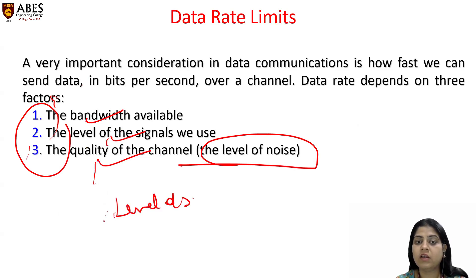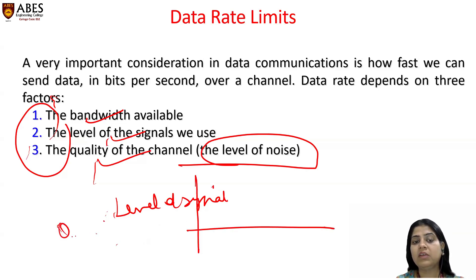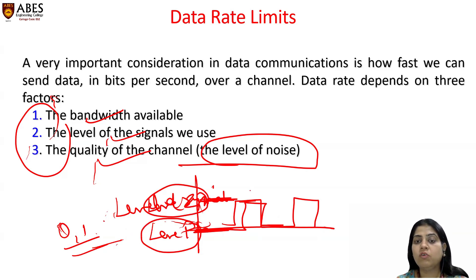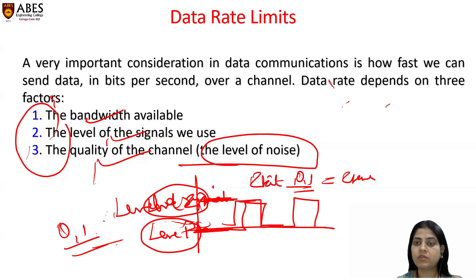Signal level means: if we consider a signal where bits are zeros and ones, then level one represents zero and level two represents one. So for one-bit data, there are two levels. For two-bit data such as 00, 01, 10, 11, there are four levels.